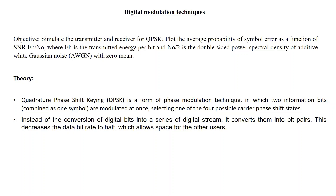QPSK is a form of phase modulation technique in which two information bits are modulated at once. The advantage of combining two bits in a single symbol is that it decreases the data bit rate to half, which allows more space for other users to transmit. Basically, it decreases the overall bandwidth requirement for the signal to be transmitted. This is the key advantage of QPSK.